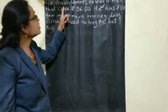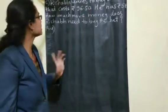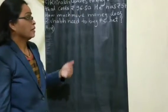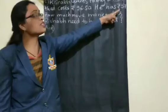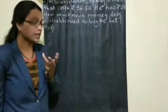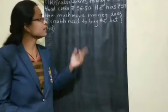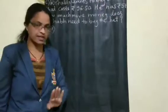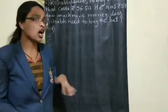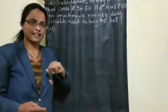The first question: Rishiv wants to buy a hat. That hat costs rupees 96.50, but he has only rupees 57. How much more money does Rishiv need to buy the hat? That means Rishiv is having rupees 57 with him and the cost of the hat is rupees 96.50 — how much extra money does he require?